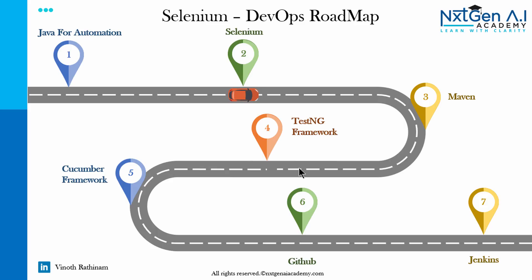All types of automation scenarios we will learn here, which is more than enough to automate any website. Then Maven build tool, which is widely used in all automation projects. Using Maven project, we will learn all the TestNG framework concepts. Nowadays all interviews are asking about BDD framework, so we will learn Cucumber framework also. Then we will upload this code into GitHub, the version control tool. And finally, the very important tool — Jenkins — where we will learn and implement the DevOps concept by integrating all these tools.